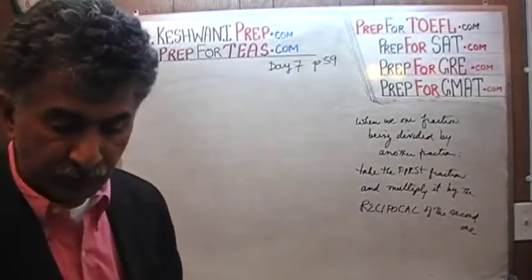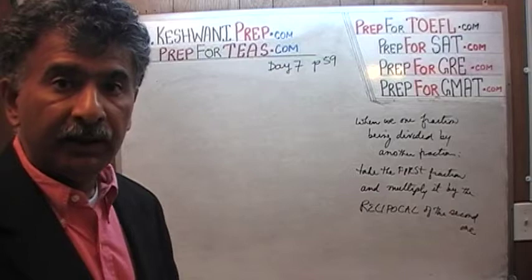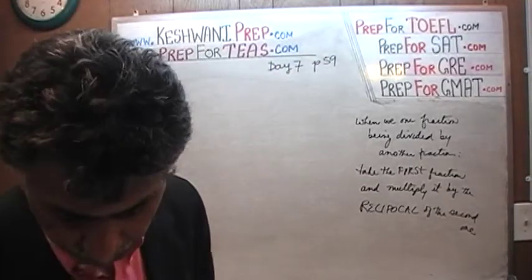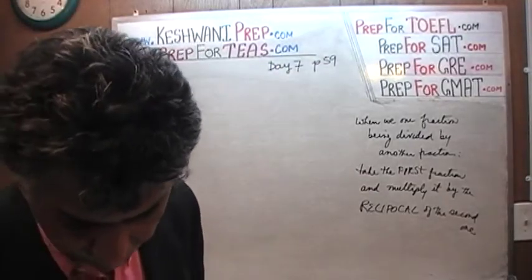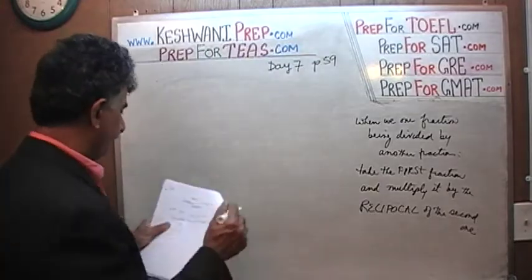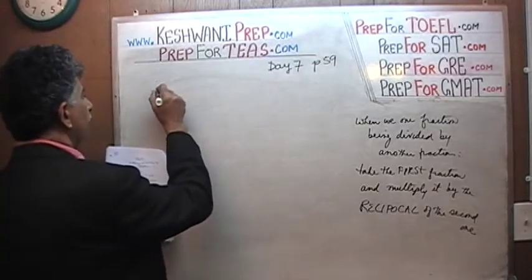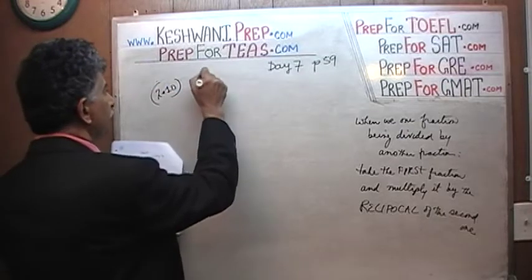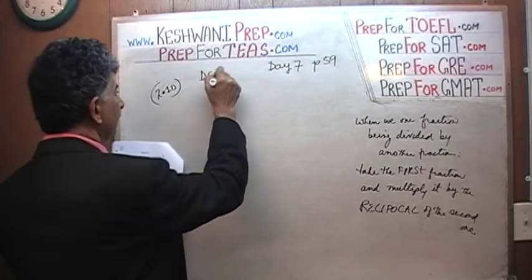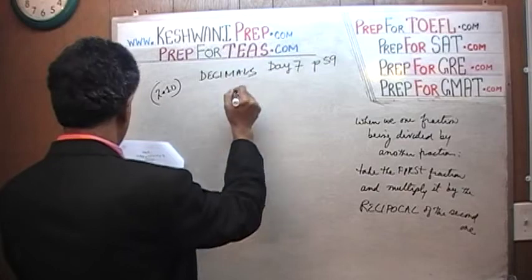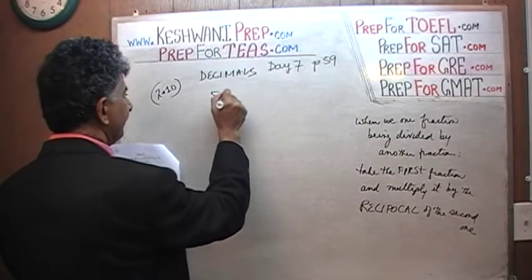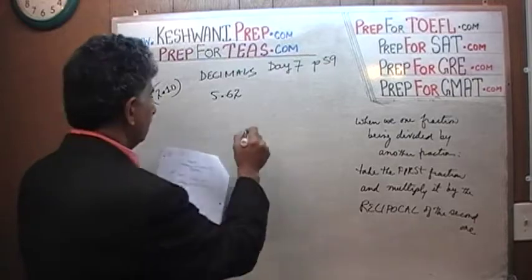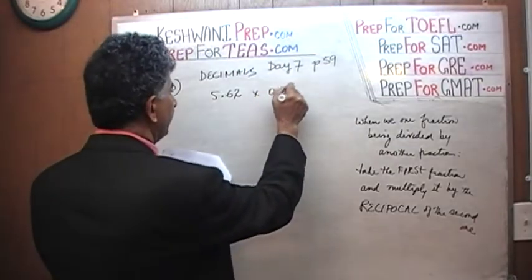Today we are going to talk about multiplying and dividing by decimals. The very first problem is example 2.10, which deals with decimals. We are being asked to multiply 5.62 by 0.3.